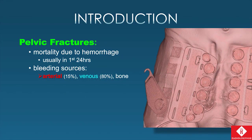Even worse, if it's an open pelvic fracture — meaning there's no tamponade ability by putting the patient in a pelvic binder — that mortality goes up to 70%. Mortality is most commonly related to hemorrhage, which typically happens within the first 24 hours.